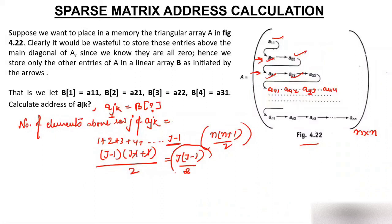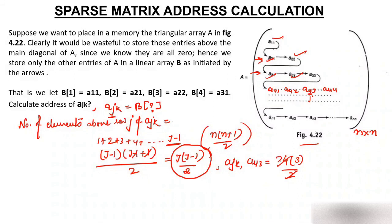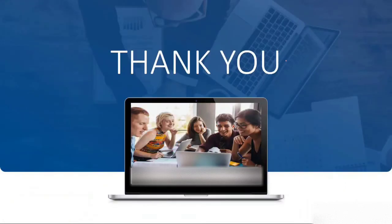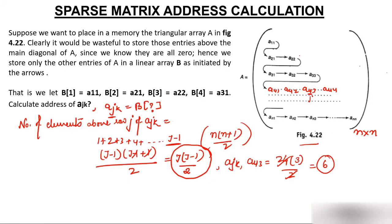So the number of elements above row J is J(J-1)/2. Let's verify: for A(4,3), J = 4, so 4 × 3 / 2 = 6. Now count the number of elements above row 4 in the figure: that is 1 (row 1) + 2 (row 2) + 3 (row 3) = 6. Absolutely correct formula.